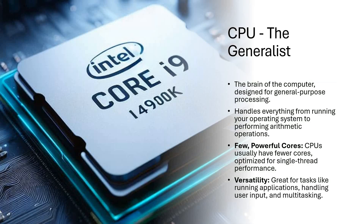CPU — generally we can call it the generalist. This is the brain of the computer and it can be used for general purpose processing. It can handle everything from running and managing your operating system to arithmetic operations. It has got a few but powerful cores and importantly it is optimized for single-thread performance. It is greatly versatile and very useful for tasks like running applications, handling user input, and multitasking.